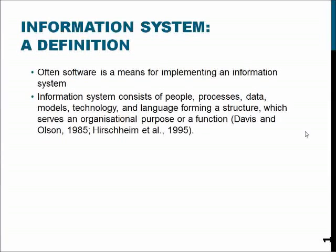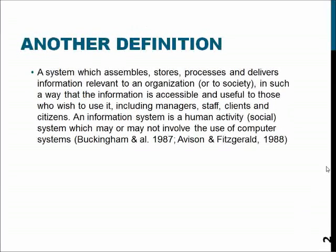Basically, the distinction is really simple. Software means only the software product or system that is developed, while the information system means a larger concept, including all the users and technology and information and modes of operating within the organization.